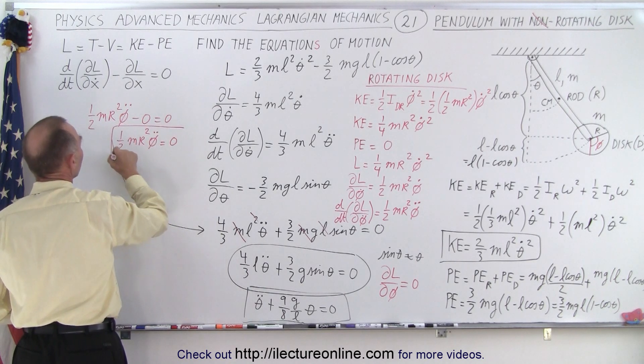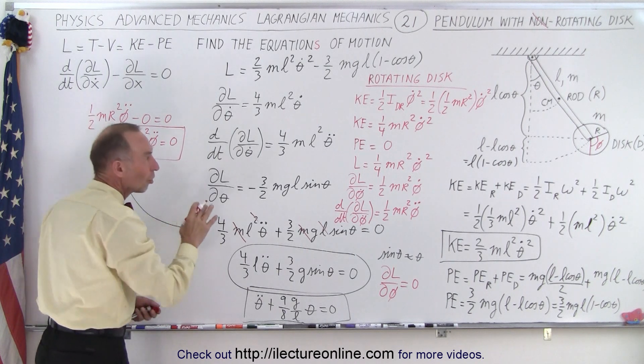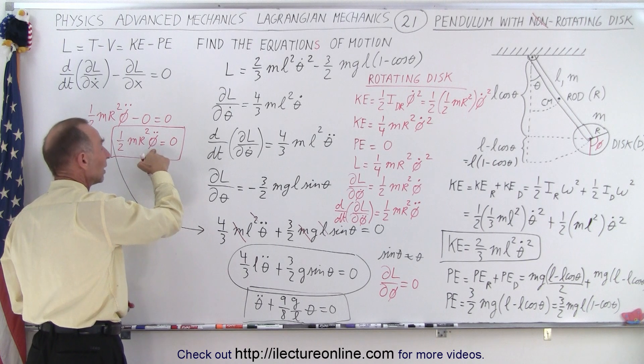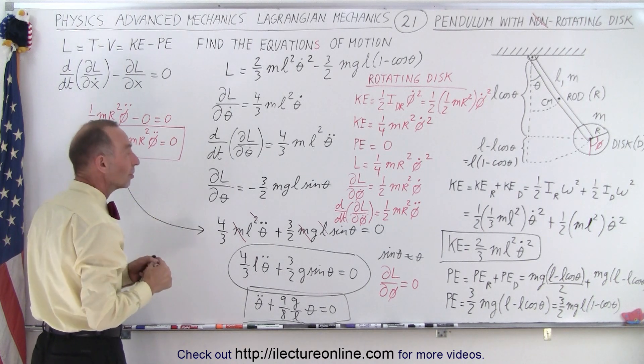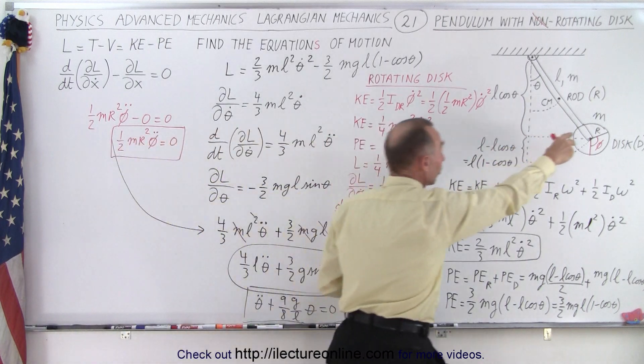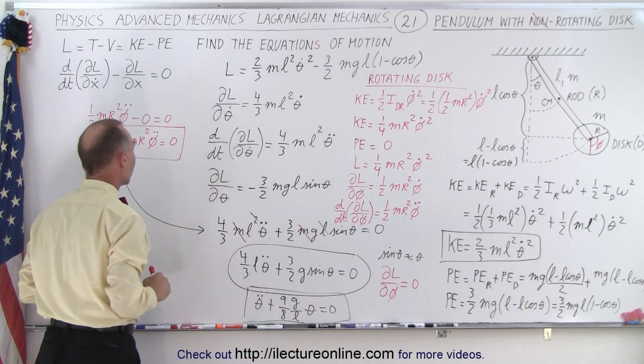Now notice that if there was no force causing the disk to rotate, then there would not be any acceleration, and therefore there would not be any rotation, which means that you wouldn't expect the disk to rotate on its own. That's based on the equation of motion that we've got.